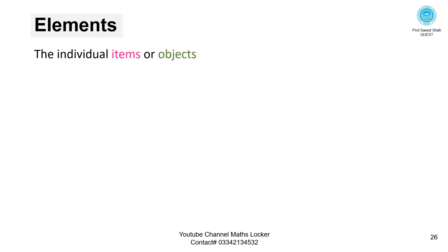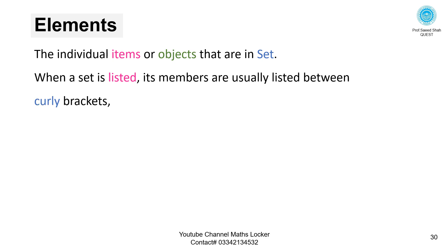Elements: the individual items or objects that are in a set. When a set is listed, the word listed is important here. Its members are usually listed between curly brackets, like this. Set of clothes. Here you can see a set that contains the elements of pants, shoes, and socks.